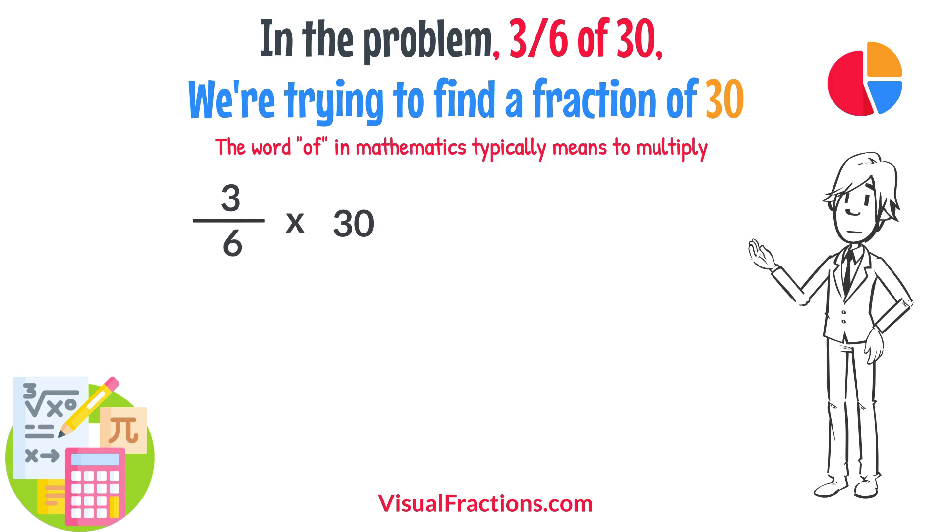To simplify the calculation, we first convert our whole number into fraction form, writing 30 as 30 over 1. This transformation makes it easier to work with our numbers as fractions.